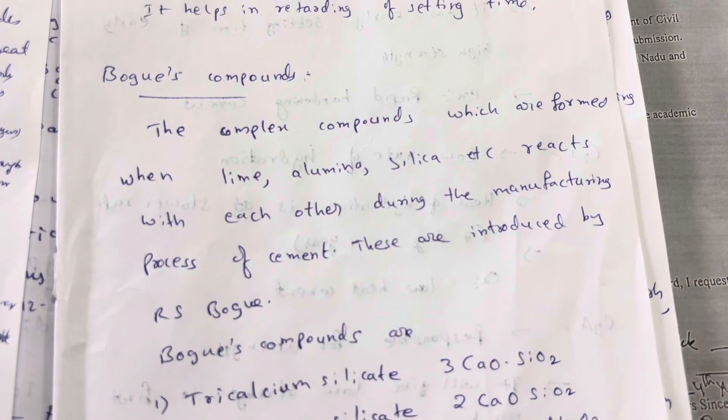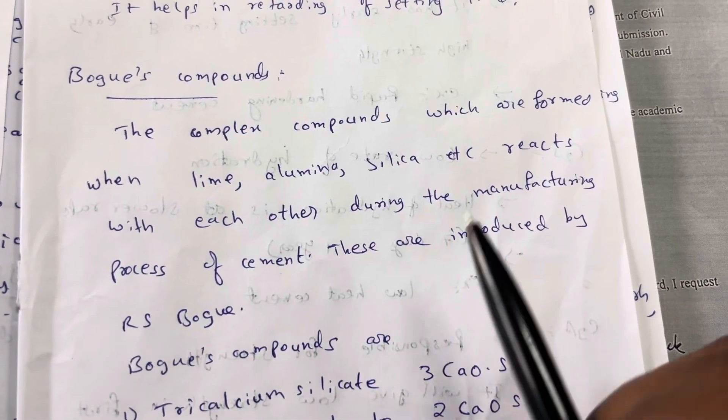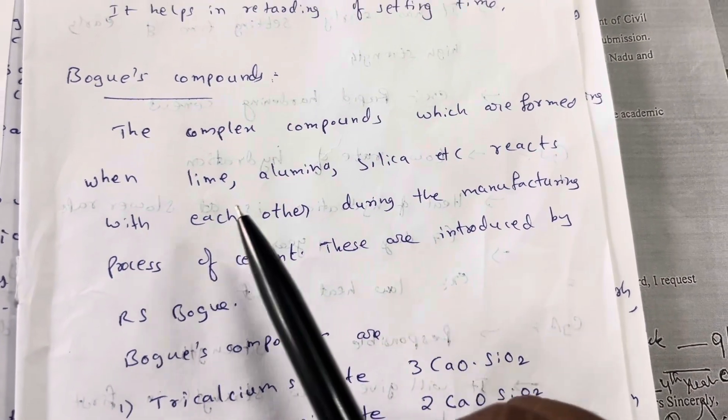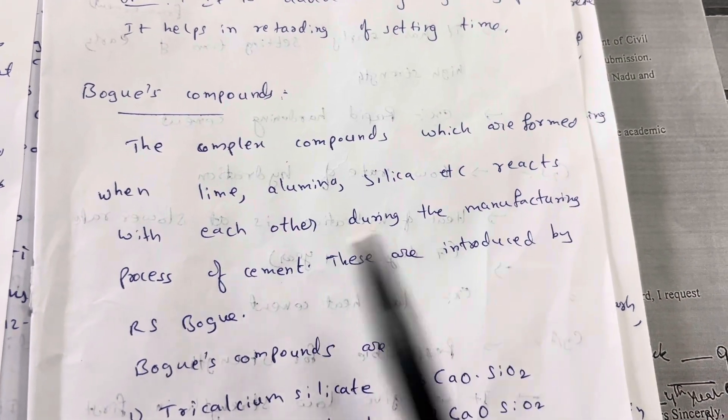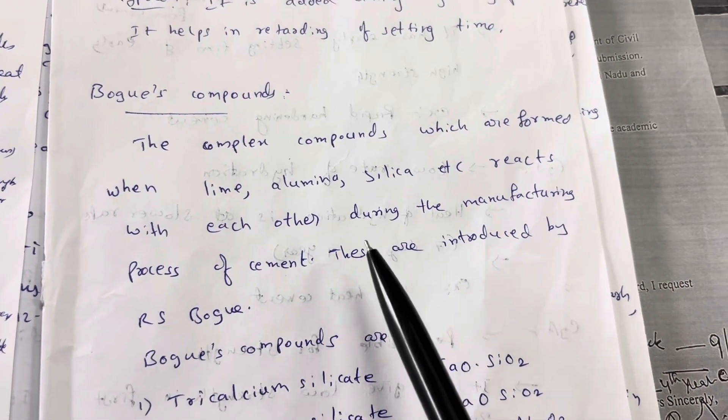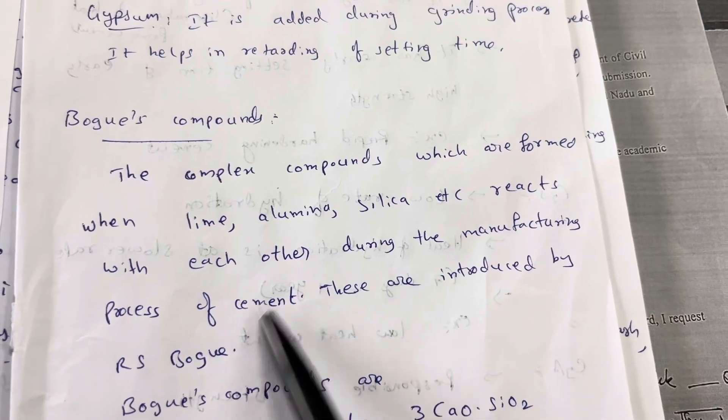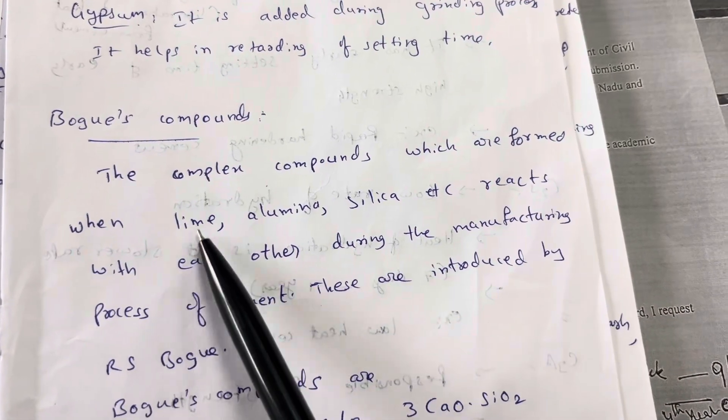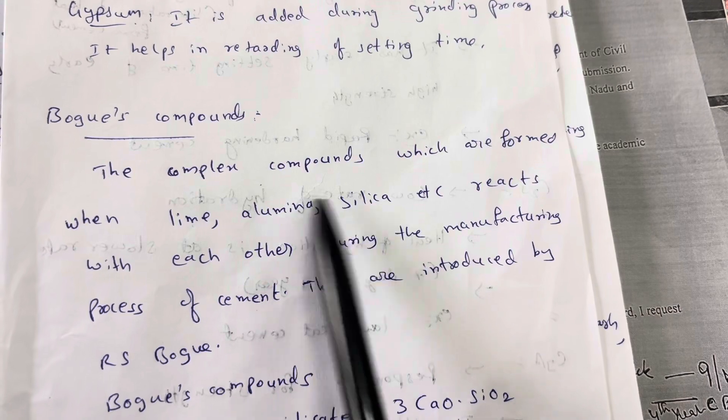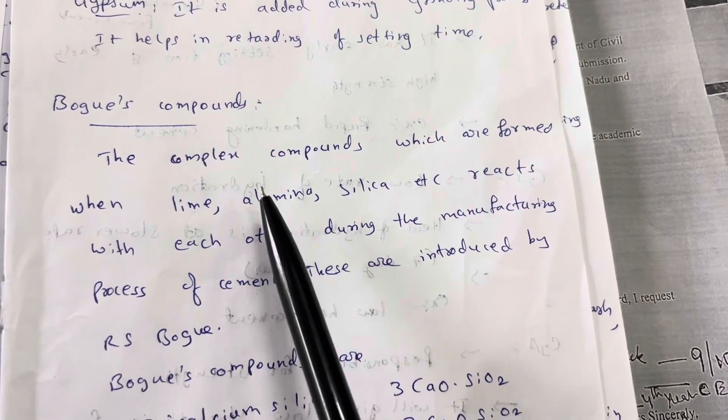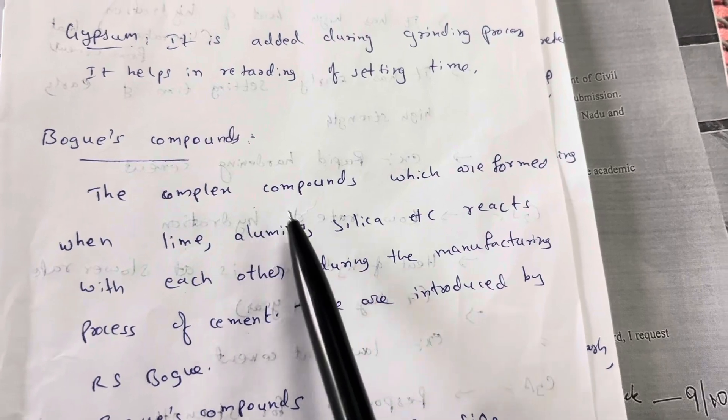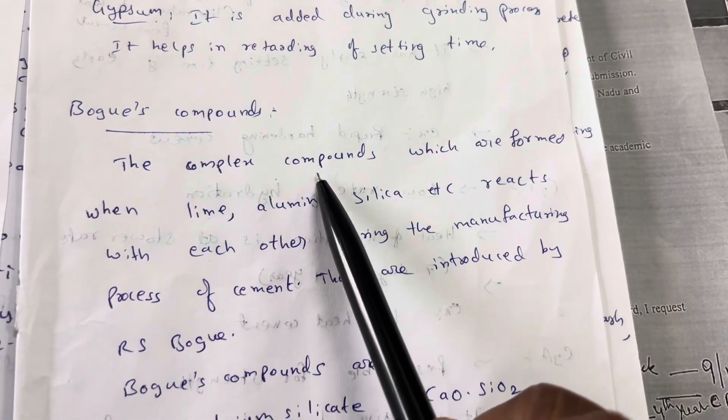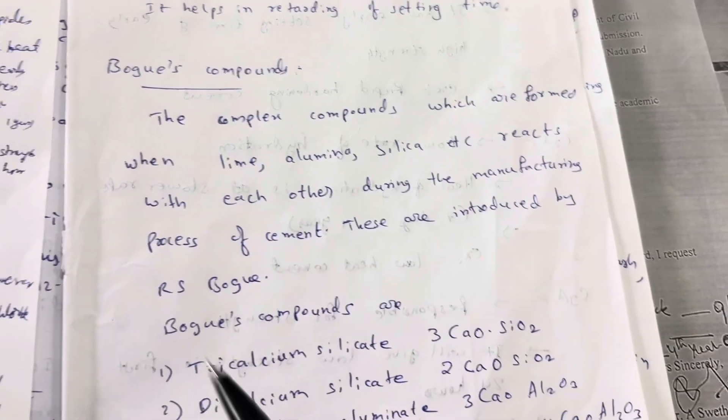Next, Boggs compounds. These are complex compounds formed when lime, alumina, silica, etc. react with each other during the manufacturing process of cement. During the manufacturing process, lime, alumina, and silica present in cement react with each other and form complex compounds known as Boggs compounds.